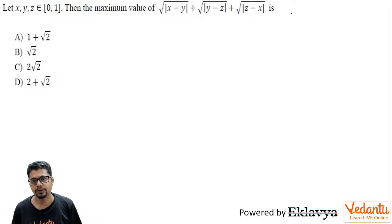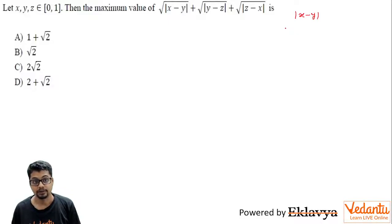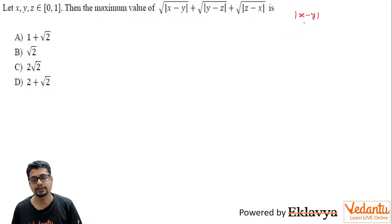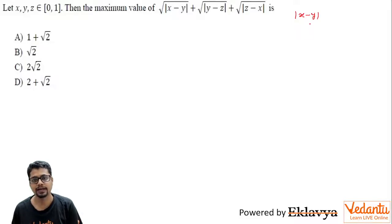If you see carefully, what |x−y| means — if you plot x and y on the real number line (since x, y, z ∈ [0,1] they are real values), it is essentially the distance between the points x and y on the number line. Similarly for |y−z| and |z−x|.